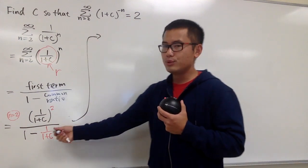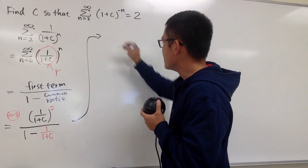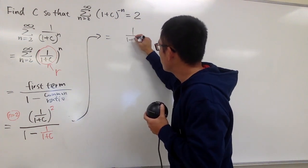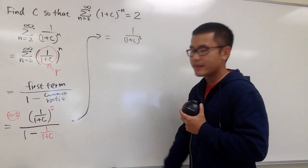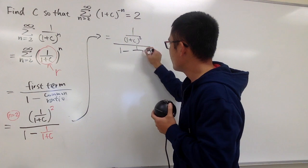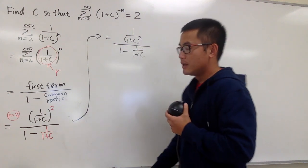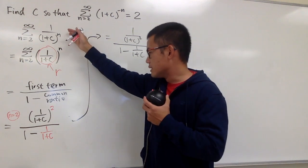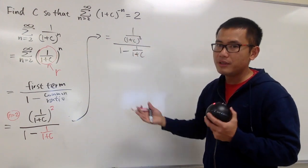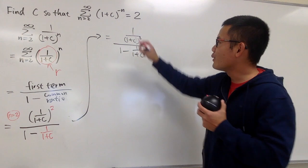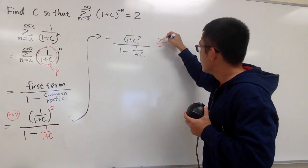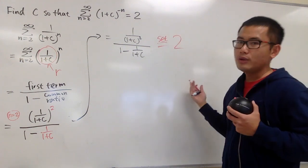Let's do a few things here. On the top, it's the same as saying 1 squared, which is 1. And on the bottom, it's the same as (1 plus c) squared. Then on the denominator of this part, I will write it as 1 minus 1 over (1 plus c). This is just the simplification, and this is what we have. This right here is the infinite geometric sum, and we know from the question we want the whole sum to be equal to 2. So I have to set this equal to 2 and solve the equation.